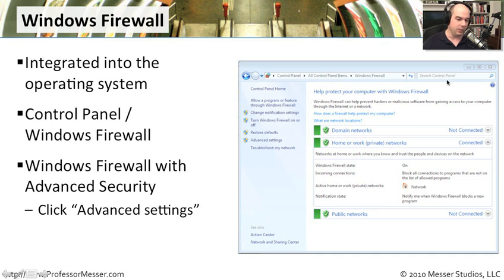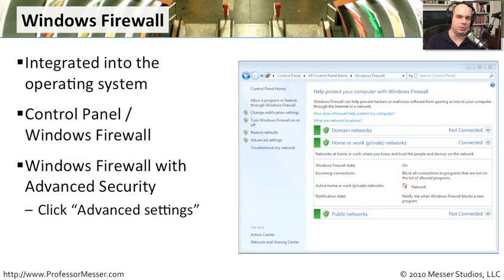There's also another firewall — really the same firewall with many additional features — called Windows Firewall with Advanced Security. You access it by going into Windows Firewall settings and choosing the Advanced Settings option, which gives you access to an entirely different set of parameters. It's more complex to set up but gives you a lot more control. It's important to understand the differences between these two.